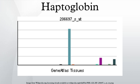Since the reticuloendothelial system will remove the haptoglobin-hemoglobin complex from the body, haptoglobin levels will be decreased in hemolytic anemias. In the process of binding hemoglobin, haptoglobin sequesters the iron within hemoglobin, preventing iron-utilizing bacteria from benefiting from hemolysis. It is theorized that because of this, haptoglobin has evolved into an acute phase protein.